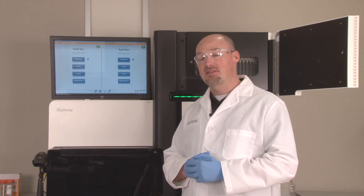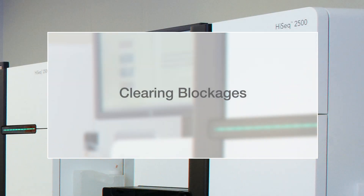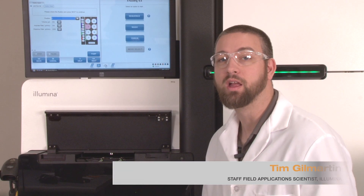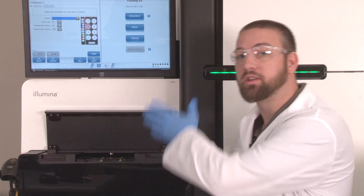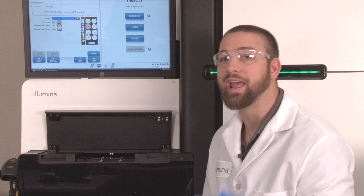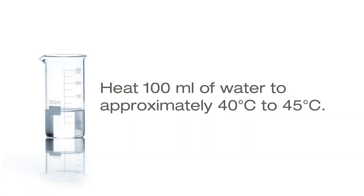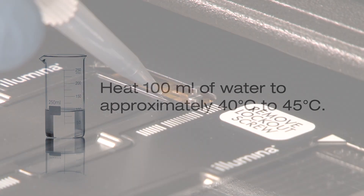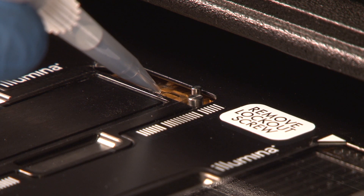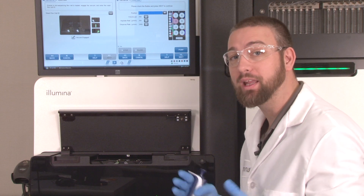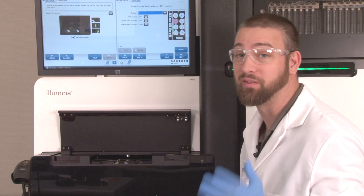Now that we know where the blockage is located in the fluidics line, we can try clearing it out. If the clog is from the outlet of the flow cell to the syringe pumps, you can clear clogs or large air gaps by performing a flow check and manually loading warm water into the outlets. We recommend heating 100 milliliters of water until it is warm, approximately 40 to 45 degrees Celsius. The warm water can help dissolve any salt deposits or solid blockages in the lines. To do this, remove the flow cell and gaskets and pipette the warm water into the outlet manifold well. The outlet manifold can only hold about 100 microliters in the shallow well, so be sure to add warm water continuously as it is drained. This process allows you to run water quickly through the back portion of the fluidics without introducing variables such as the flow cell or gaskets.